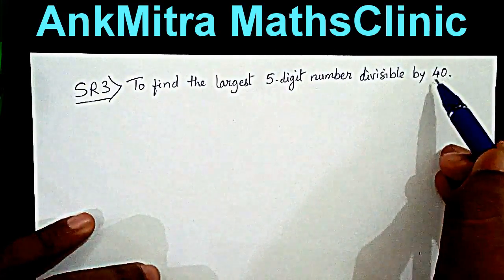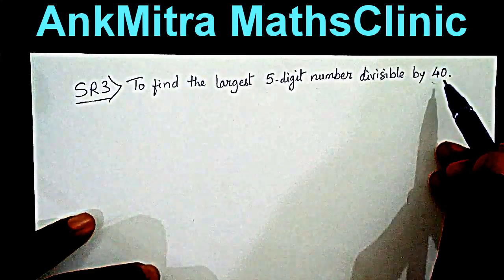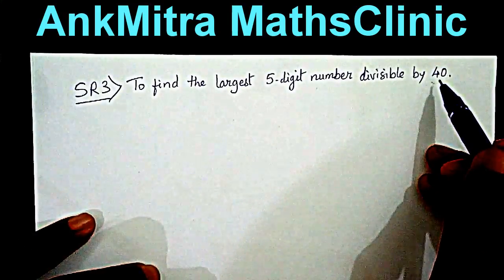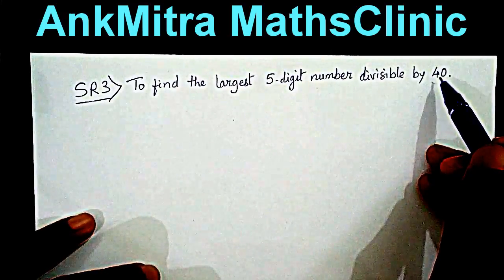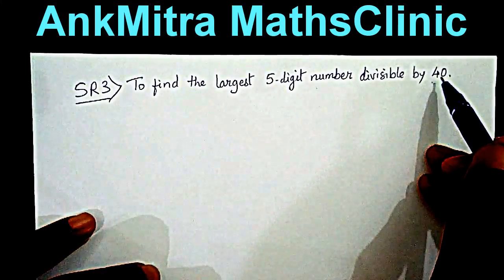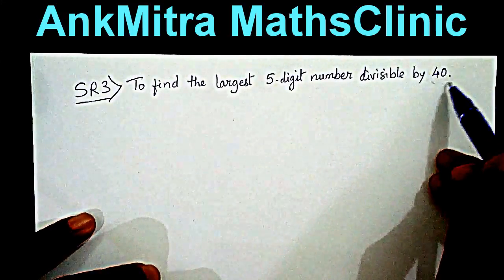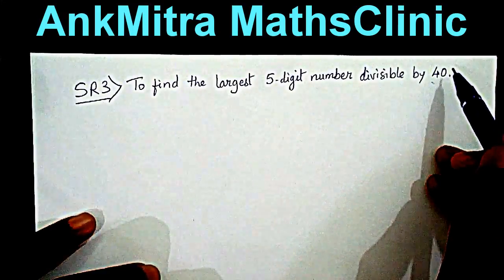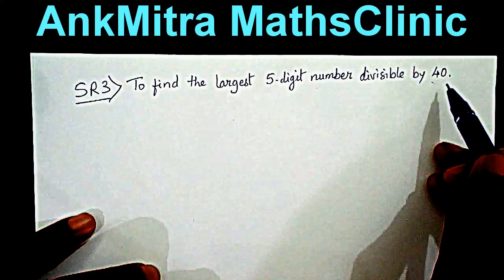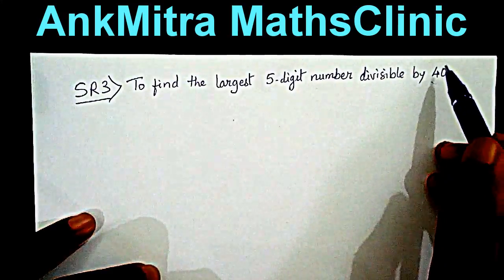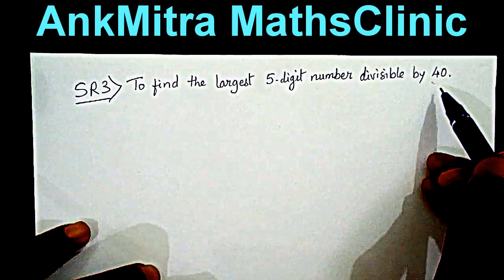Starting with the number 40, we know that numbers like 200, 400, 800 are all divisible by 40, whereas 100, 300, 500 are not. Considering the multiples of 200, we come to 1000. 1000 is a multiple of 200, hence it will be divisible by 40.